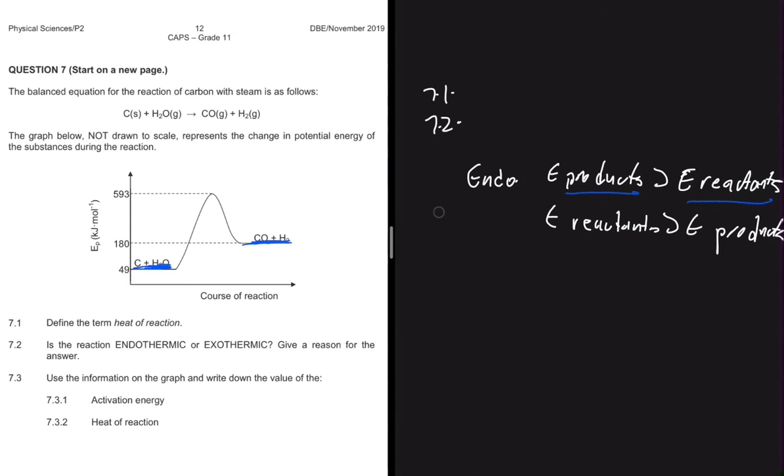So we're just going to erase this, what we have for exothermic and leave that there. We're saying that the reaction is endothermic. And why are we saying so? We're saying so because the energy of the products is greater than the energy of the reactants. And that's 7.2. Let's move to 7.3.